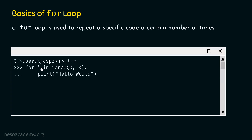Then again, we get back and i will receive value two. Then again we go inside and print hello world. Again we get back, but this time i will not receive the next value because we do not have any other value apart from zero, one, and two. As range function has returned zero, one, and two, i will only receive these values. This means that this for loop will print the statement three times.